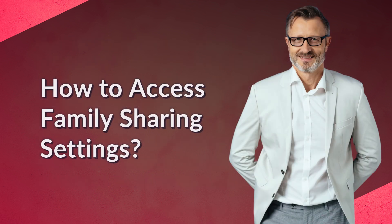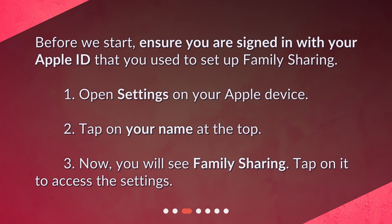How to access family sharing settings? Before we start, ensure you are signed in with your Apple ID that you use to set up family sharing. 1. Open Settings on your Apple device. 2. Tap on your name at the top. 3. Now you will see Family Sharing. Tap on it to access the settings.